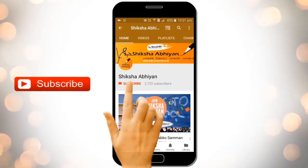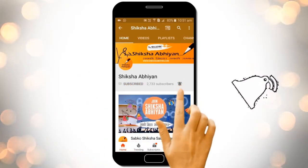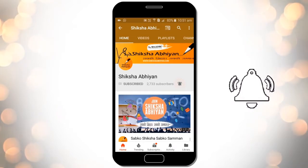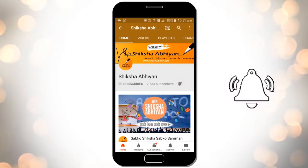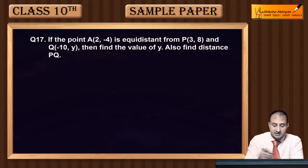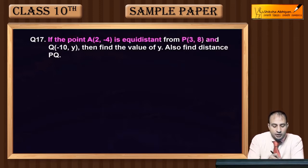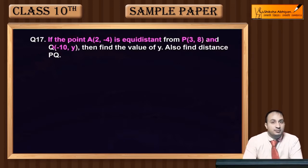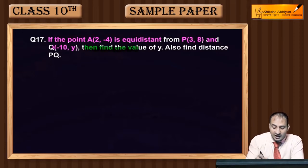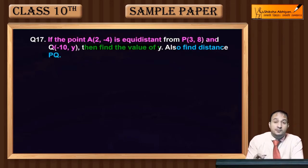Subscribe to our channel by clicking the subscribe button, click the bell button and enjoy the latest uploads. Now see question 17: if the point A(2, -4) is equidistant from the point P(3, 8) and Q(-10, y), then find the value of y. Also find the distance PQ.